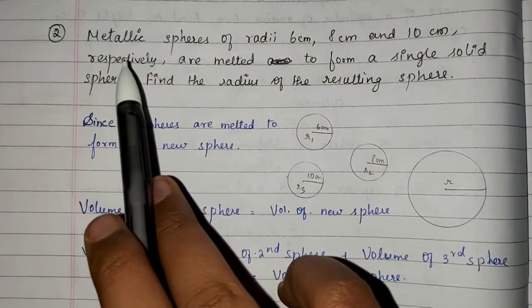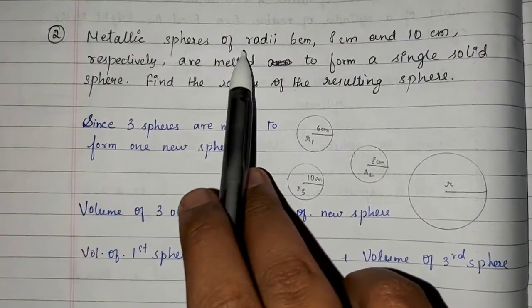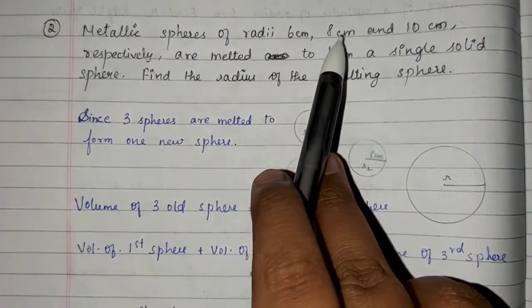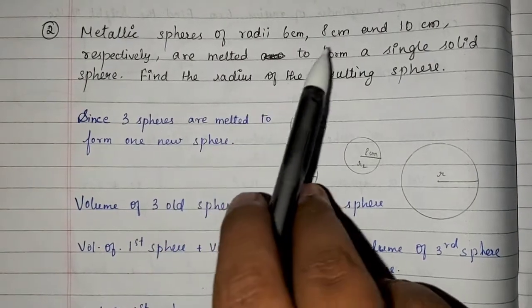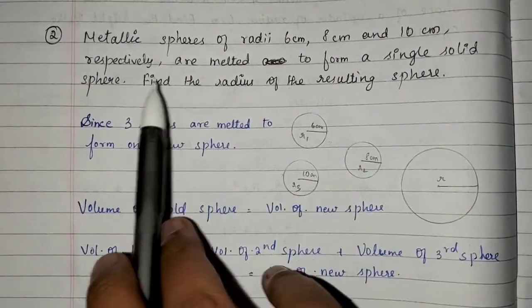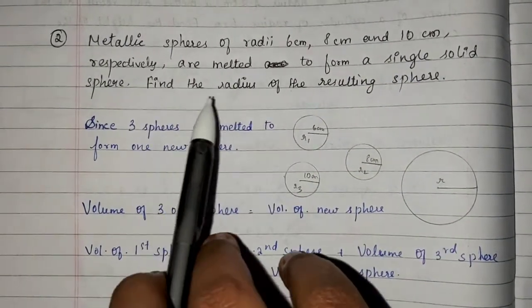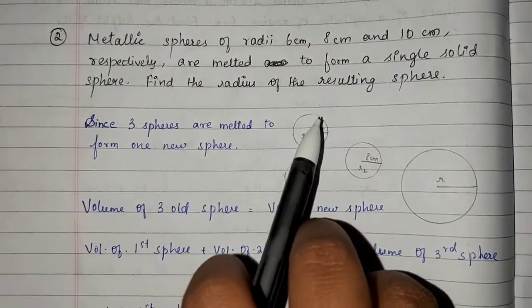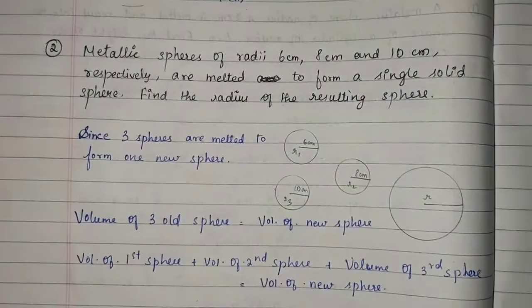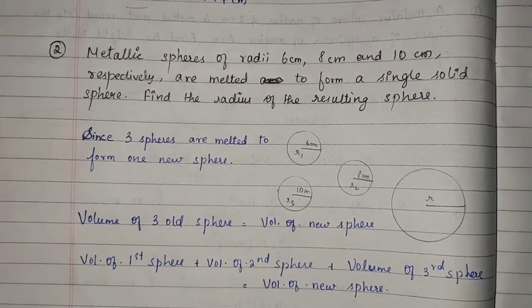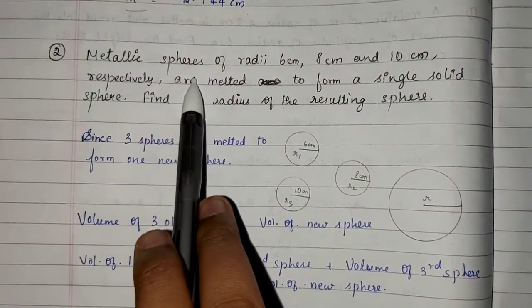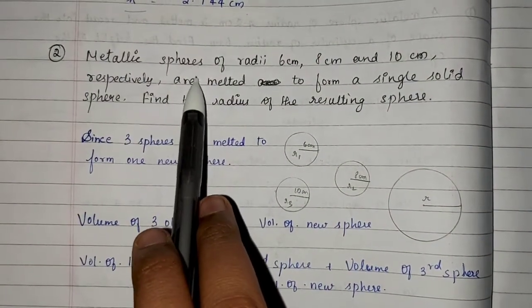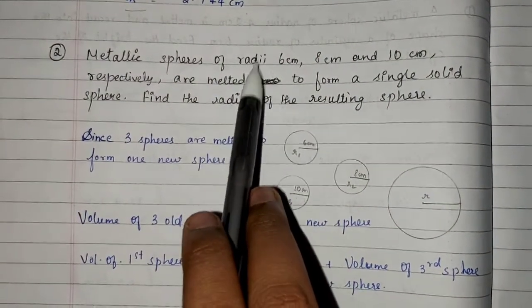Next is the second question. Metallic spheres of radii 6 cm, 8 cm, and 10 cm respectively are melted to form a single solid sphere. Find the radius of the resulting sphere.